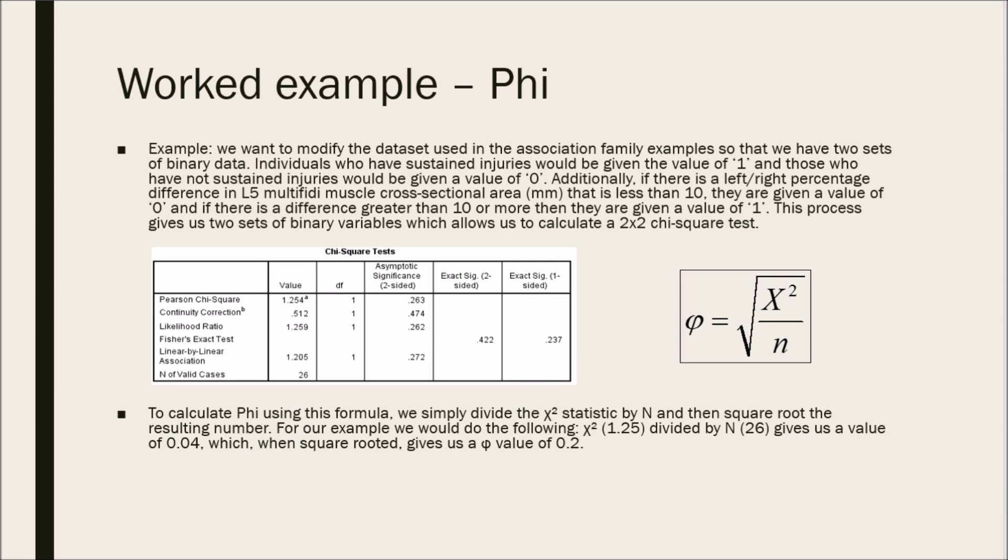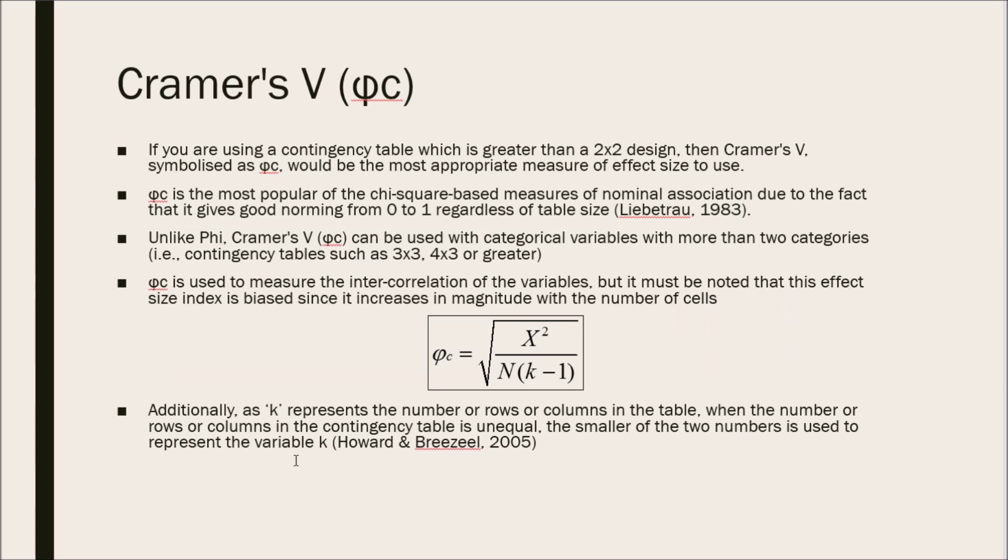Now moving on to Cramer's V. If you're using a contingency table which is greater than a 2 by 2 design, then Cramer's V would be the most appropriate measure of effect size to use. Cramer's V is the most popular of the chi-square based measures of nominal association due to the fact that it gives a good norming from 0 to 1, regardless of the table size.